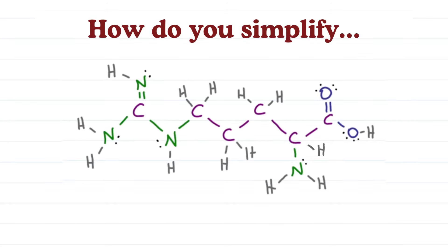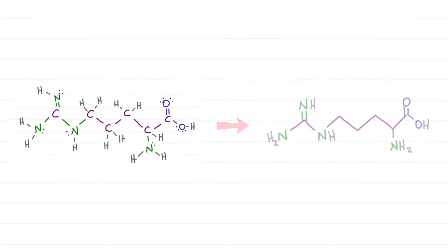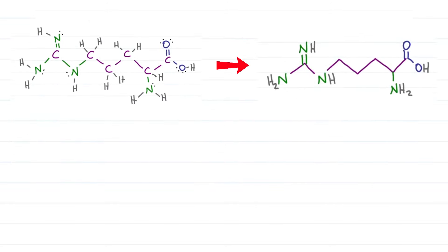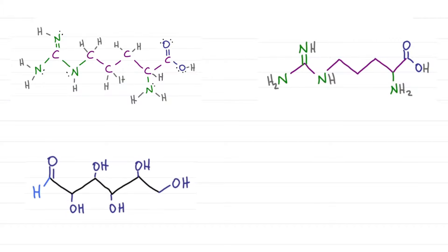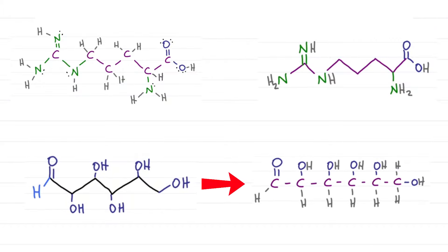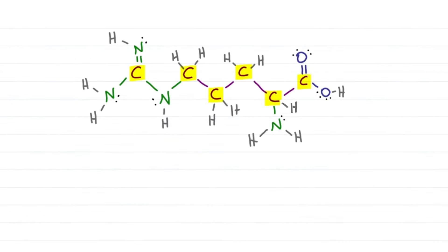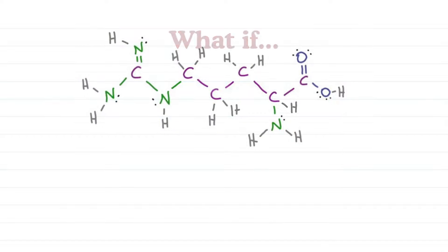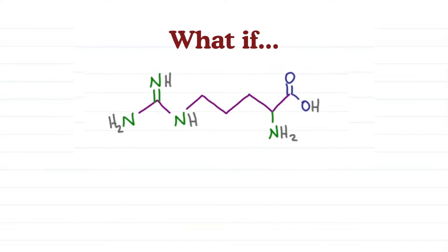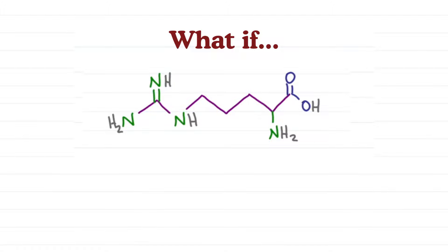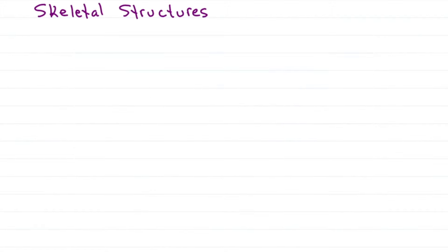How do you simplify this amino acid into this? Or when given this version of glucose, can you easily find all the carbon and hydrogen atoms? If organic compounds are mostly made of carbon and hydrogen with a few other atoms like oxygen or nitrogen, what if we didn't have to draw all the carbons and hydrogens? That's what skeletal structure and this video is all about.